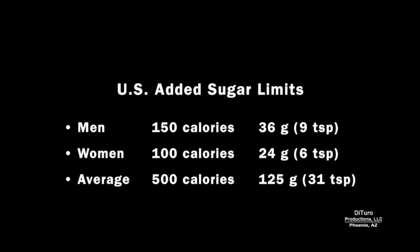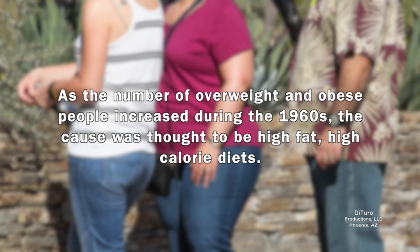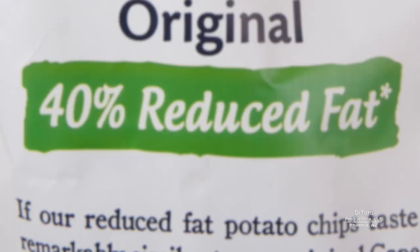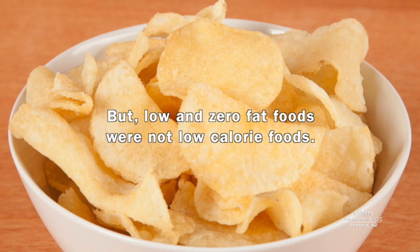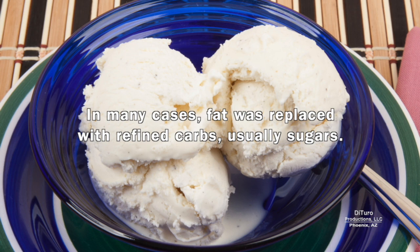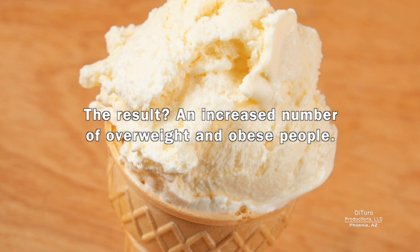Added sugar does not include natural sugars in fruits, vegetables, grains, and legumes. As the number of overweight and obese people increased during the 1960s, the cause was thought to be high-fat, high-calorie diets. To reduce fat, food manufacturers cranked out hundreds of low and reduced-fat foods. But low and zero-fat foods were not low-calorie — in many cases, fat was replaced with refined carbs, usually sugar. The result was an increased number of overweight and obese people.